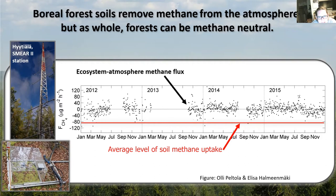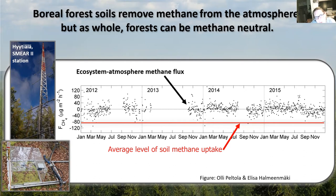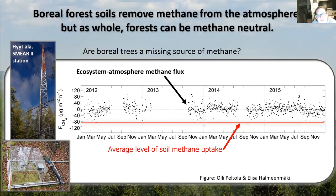We can do a different type of measurement where we build a tall tower and measure how much methane is actually moving from the forest to the atmosphere or vice versa. When we do those measurements, we find very different results. While the soils of boreal forests act as sinks of methane, the forest as a whole is methane neutral — it neither emits nor takes up large amounts of methane. This tells us that somewhere in those forests, we have a source of methane that has not been identified yet.